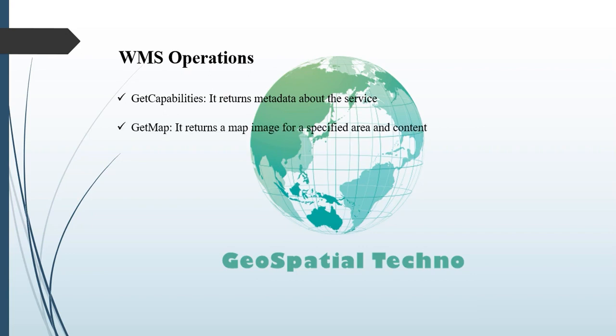GetMap returns a map image for a specified area and content. Parameters specified in the GetMap request include width and height of the map, coordinate reference system, rendering style, and image format.